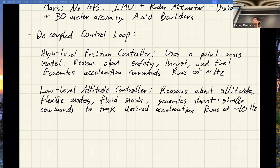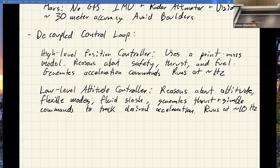The rocket mass is also constantly changing as you burn fuel, since fuel is most of the mass — that has to be accounted for. You run feedback on position and velocity to adjust thrust. For flexible modes you use linear robust control in the attitude controller. For fluid slosh, you model it as a spherical pendulum whose length and mass are determined by the fuel volume, do system ID to fit the pendulum model to actual slosh dynamics, and use notch filtering to avoid exciting those modes.